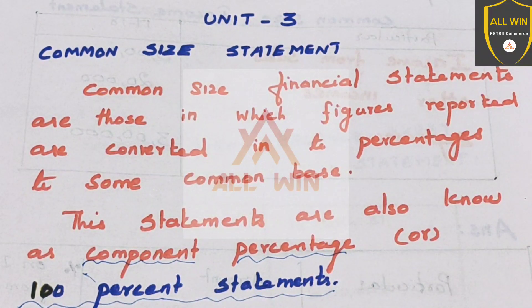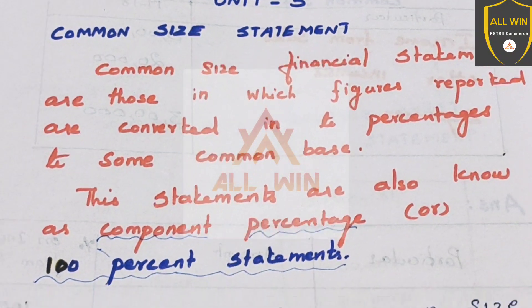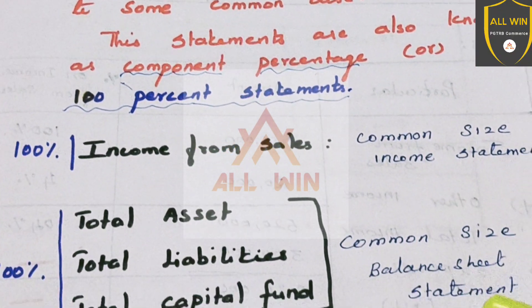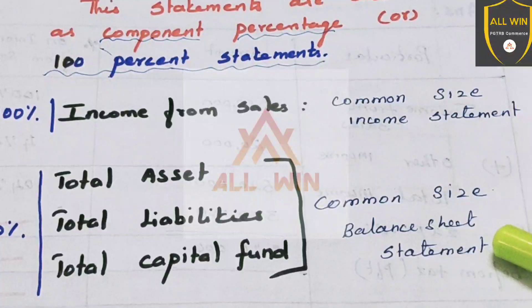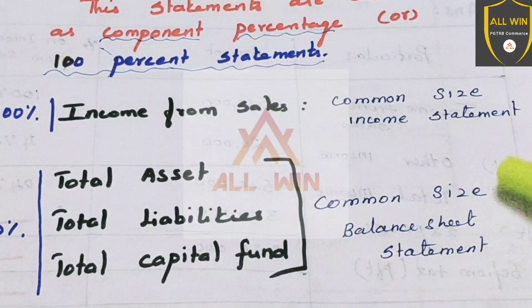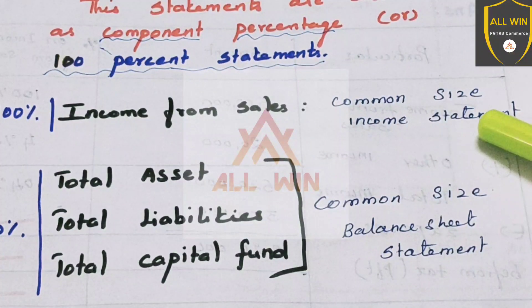There are two types of common size statements: the common size balance sheet statement and the common size income statement, which is based on 100 percent.